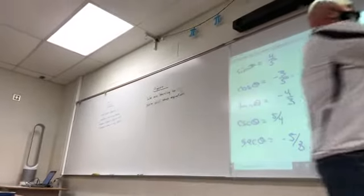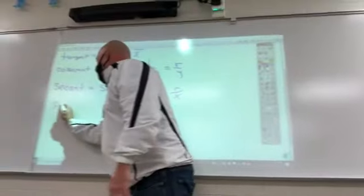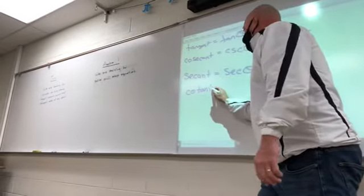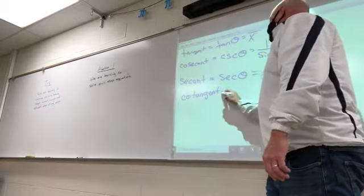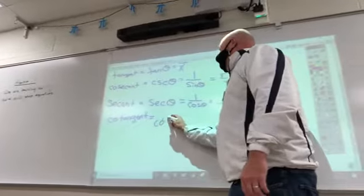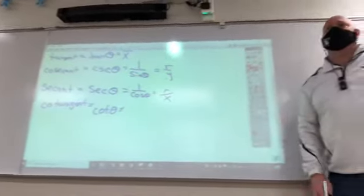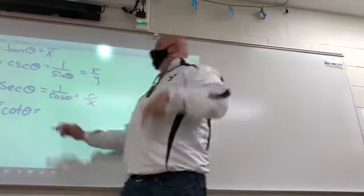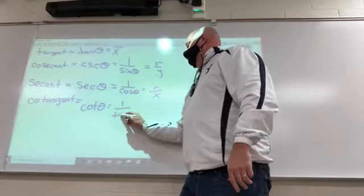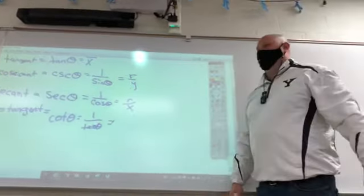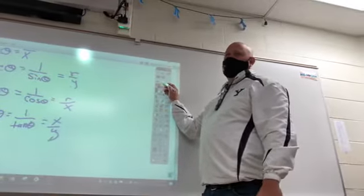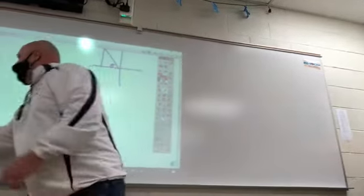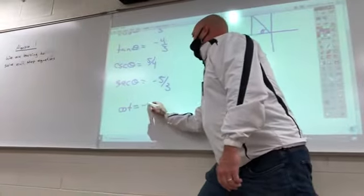We've got one more to go. Cotangent — we abbreviate that COT. It's the reciprocal of tangent, which means it's x over y. Going back to our example, cotangent is going to be negative 3 fourths.